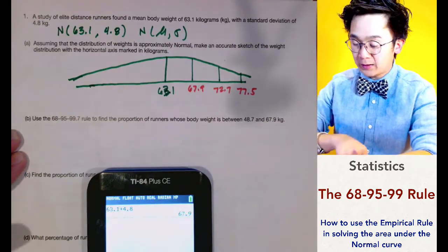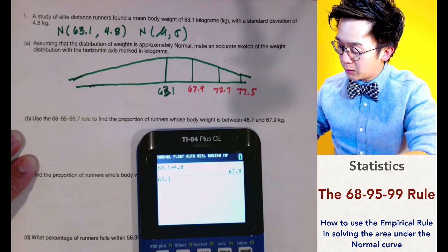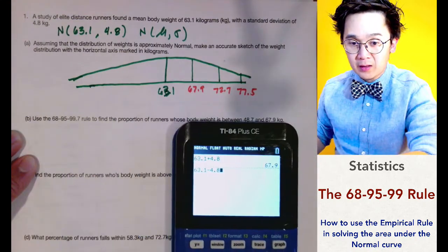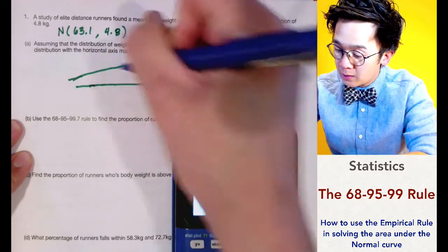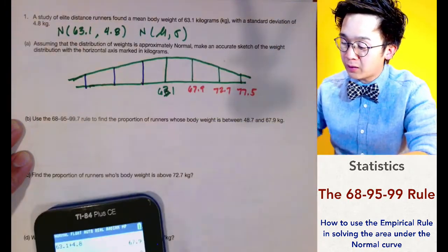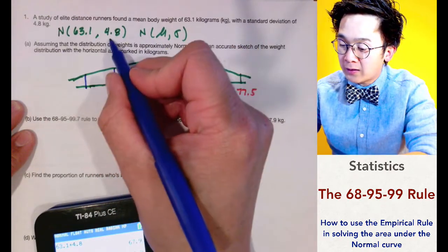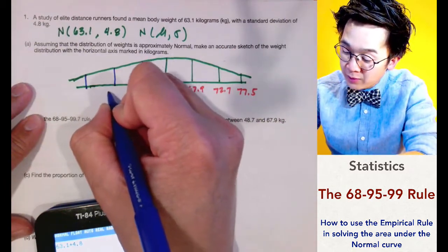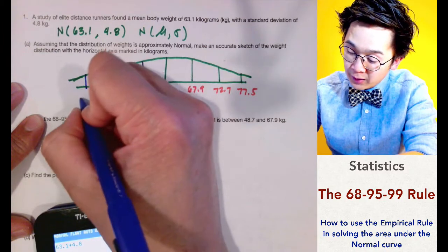To the left of the curve, starting from 63.1 we subtract 4.8 to get 58.3 for the first standard deviation, then 53.5 for the second, and 48.7 for the third standard deviation away from the mean.